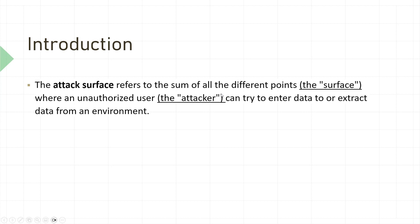So first, what is attack surface? By definition, attack surface refers to the sum of all the different points where an unauthorized user or attacker can try to enter, extract data from, or attack an environment. Let's understand this with an example.